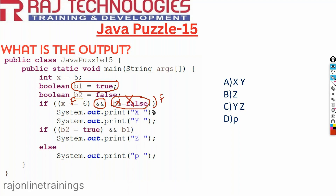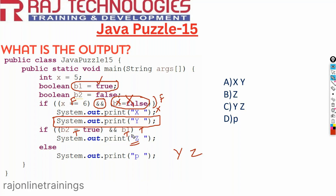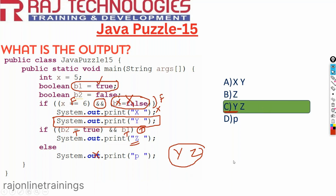Since the first condition is false the entire condition is false, so the if block does not execute. But since the print y statement is not part of the if block, it executes and prints y. Then in the next if, b2 equal to true assigns true to b2, and b1 is still true. So true AND true is true — it prints z. The else part does not execute. So the correct output is y and z, which is option C.